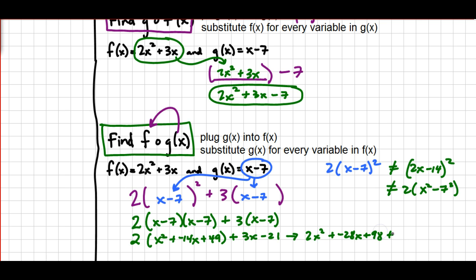And then the 3x and the negative 21 are just hanging out. I do have some like terms here. There's no other 2x squareds or any other x to the second power, so that just gets rewritten. The negative 28x and the 3x get combined to make negative 25x. The 98 and the negative 21 combine to make 77.